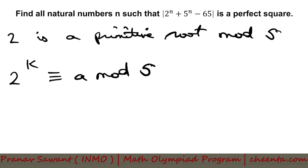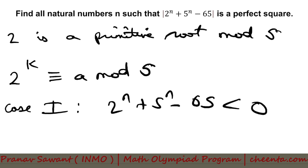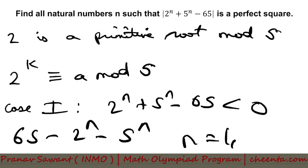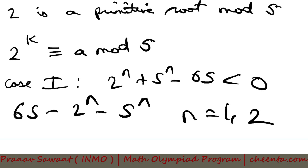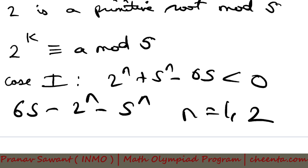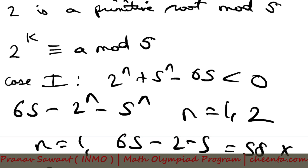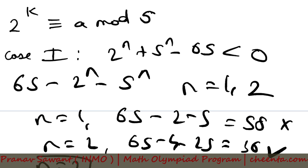What I thought is maybe we can reduce this into a certain number of cases. Case 1 would be when 2^n + 5^n − 65 is less than 0, so the modulus opens as 65 − 2^n − 5^n. This obviously happens for n = 1 and n = 2, and because we only have two cases, we can check them by hand. At n = 1, we get 65 − 2 − 5 = 58, which is not a perfect square. At n = 2, we get 65 − 4 − 25 = 36, which is a perfect square. So n = 2 is a valid solution.